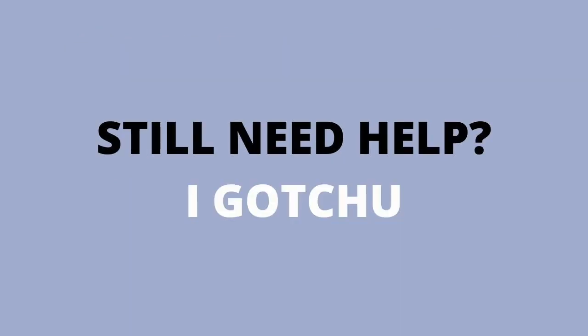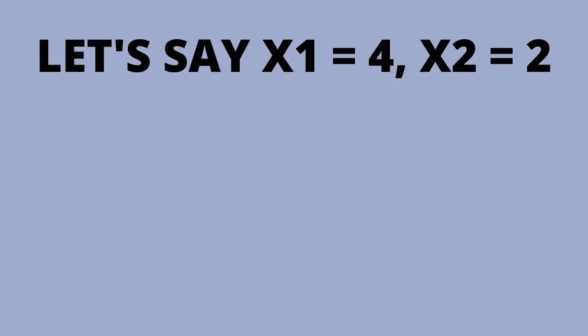Still need help? I got you. Let's say x1 is 4, x2 is 2. Add them up, and then divide by 2. Put the number on the side for right now.